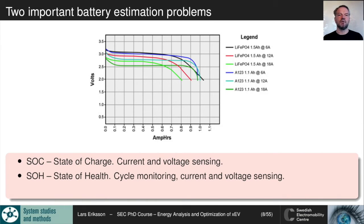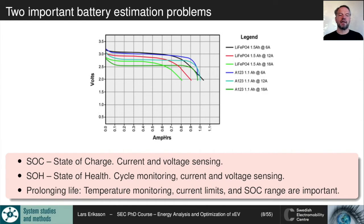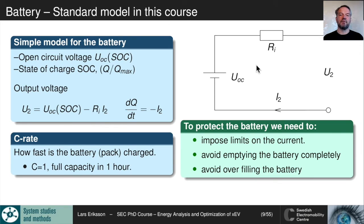In a hybrid, we track state of charge to decide whether to use the electric machine or combustion engine. In a real product it's important to monitor state of health by tracking cycle count, current, voltage, and temperature stressing the battery. To prolong battery life, temperature monitoring is important, as is monitoring currents and keeping the SOC in its most desirable range.